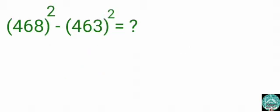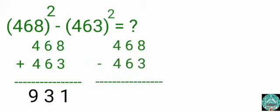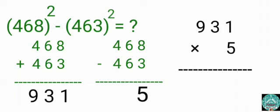468 squared minus 463 squared. Add 468 and 463: 468 plus 463 equals 931. Subtract 463 from 468: 468 minus 463 equals 5. Then multiply 931 by 5. 931 times 5 equals 4,655.